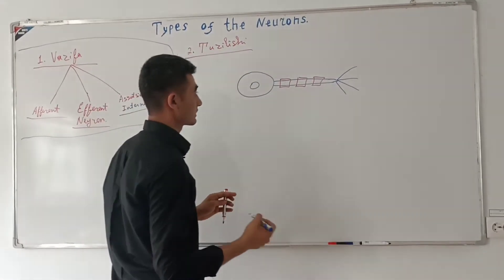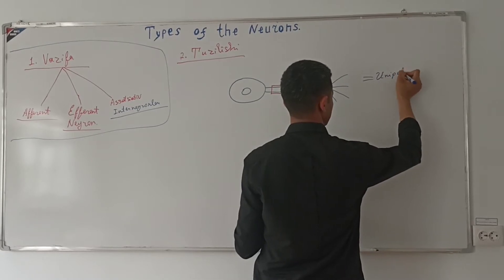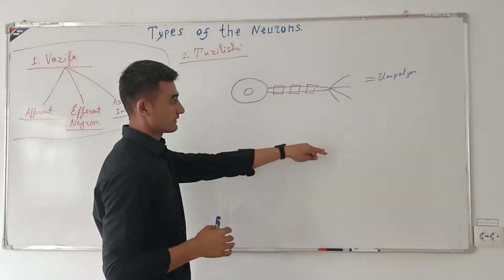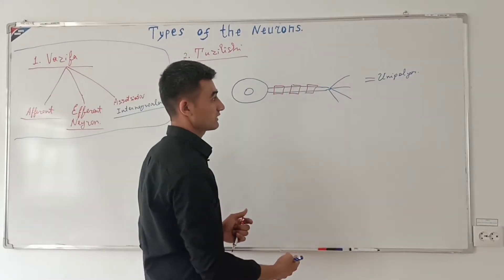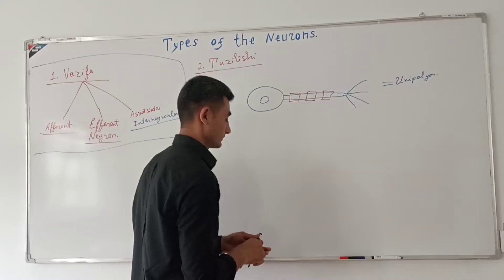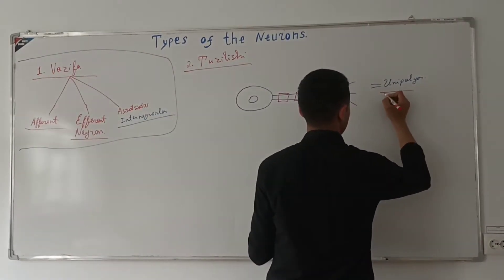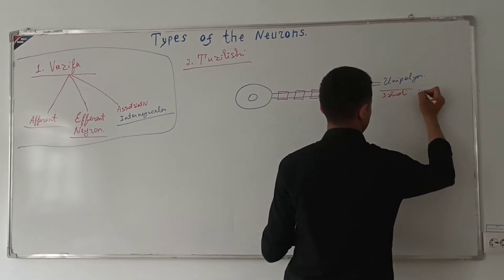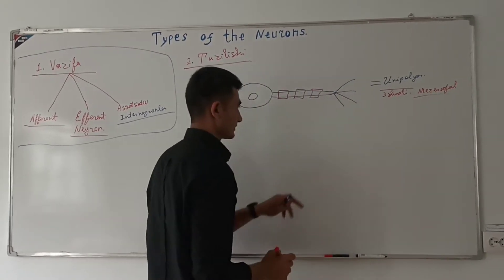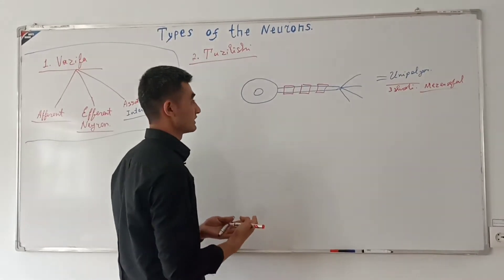Bu unipolar neyron deb ataladi. Unipolar neyronlar bitta o'simtaga ega bo'lgan neyronlar bo'lib, ular orasidagi farqni ko'rsatish mumkin.